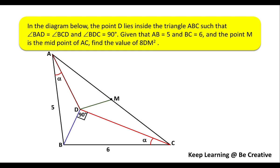So, let's begin with the problem. In the diagram below, the point D lies inside triangle ABC such that angle BAD equals angle BCD and angle BDC equals 90 degrees. Given that AB equals 5 and BC equals 6, and the point M is the midpoint of AC, find the value of 8 times DM squared.